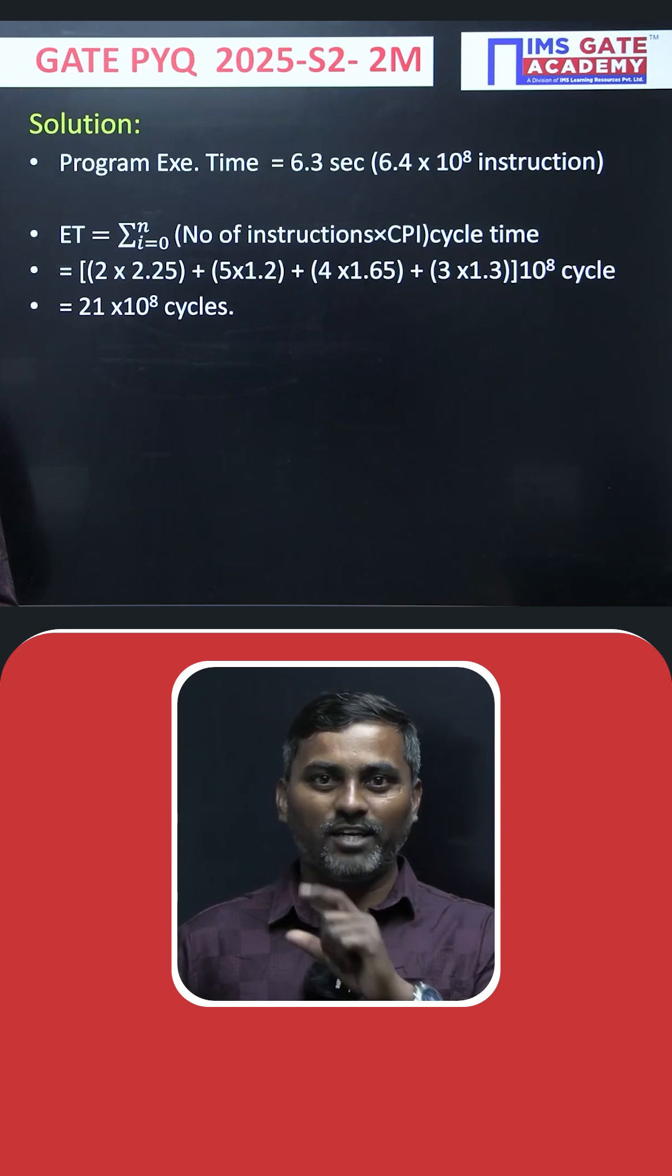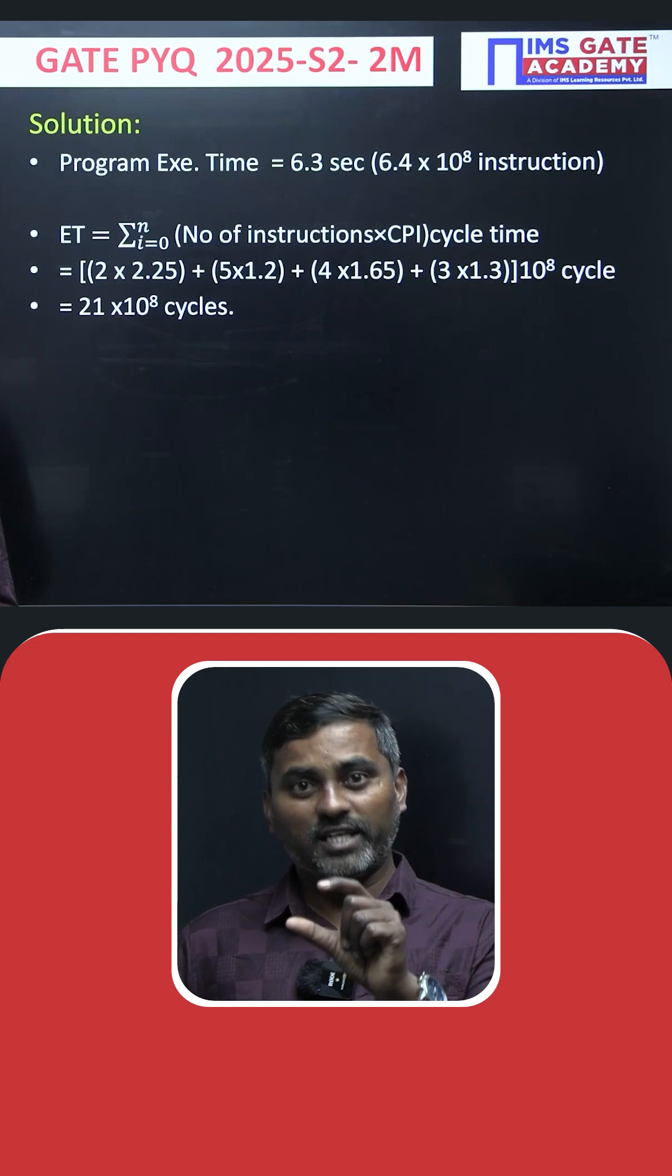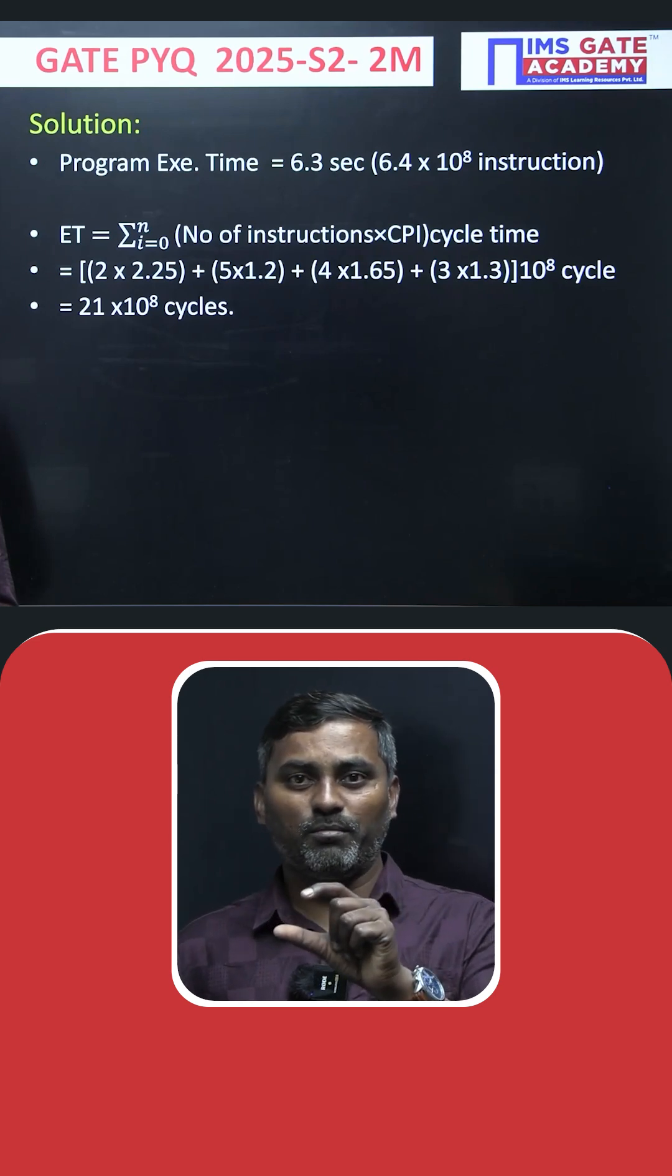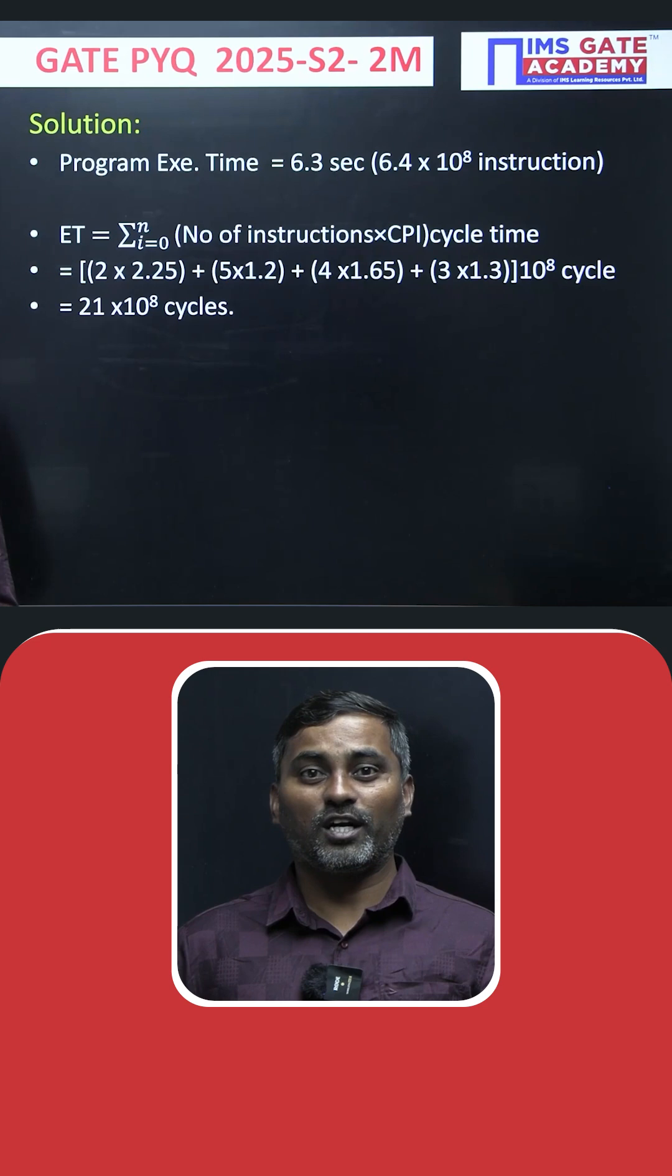For each category, I multiply the number of instructions by the number of clocks: (2 × 2.25) + (5 × 1.2) + (4 × 1.65) + (3 × 1.3) = 21 × 10^8 clock cycles.